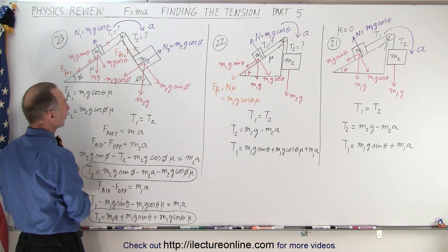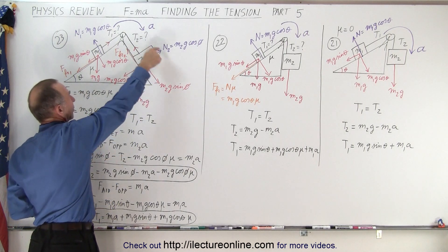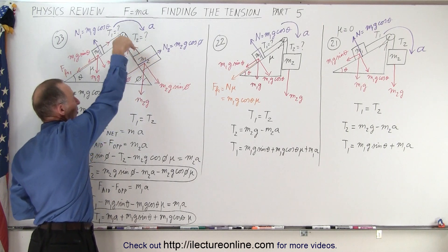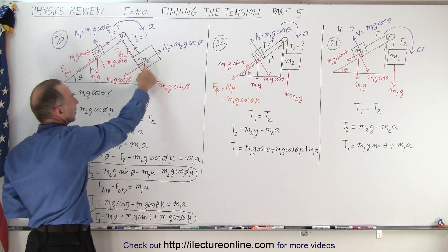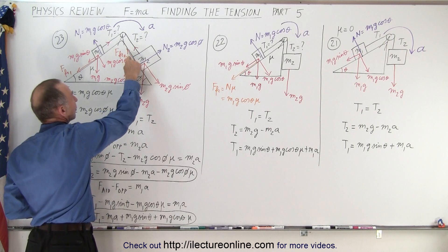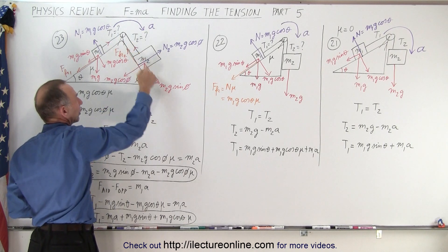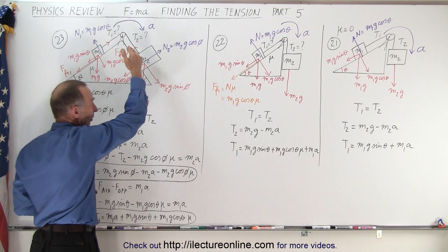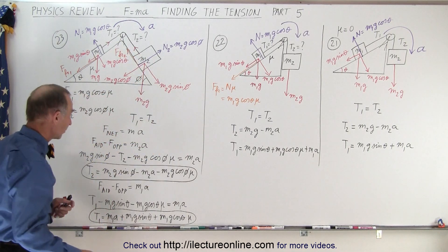So first we look at M2. So if we draw a free body diagram here and we know that it's accelerating in this direction, then this will be the aiding force and those two will be the opposing forces. The tension and the friction force will oppose the acceleration.